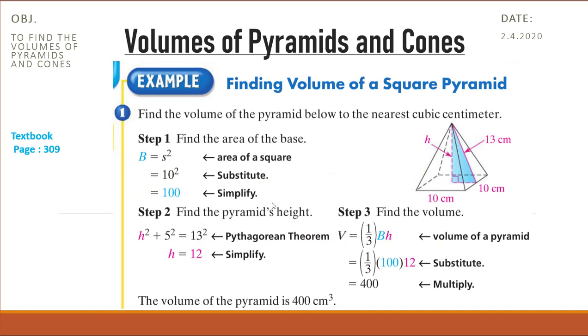Now in example one on the same page, we're going to find the volume of this square pyramid to the nearest cubic centimeter. At first, we know that the base length is 10, so the base area is 10 squared which is 100.